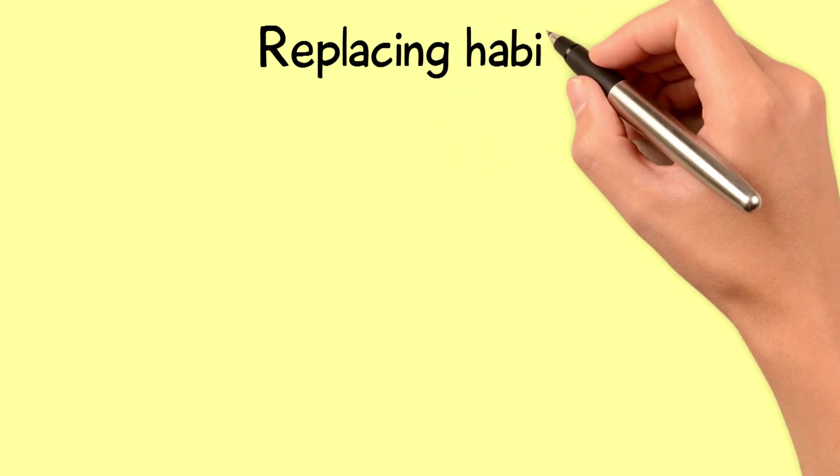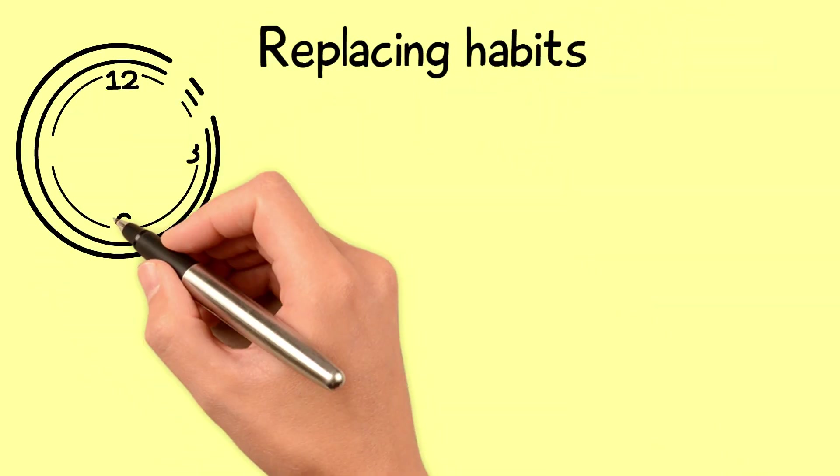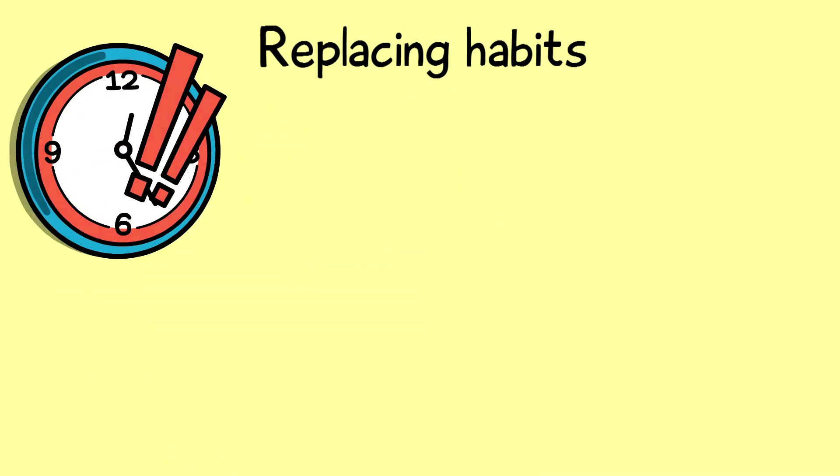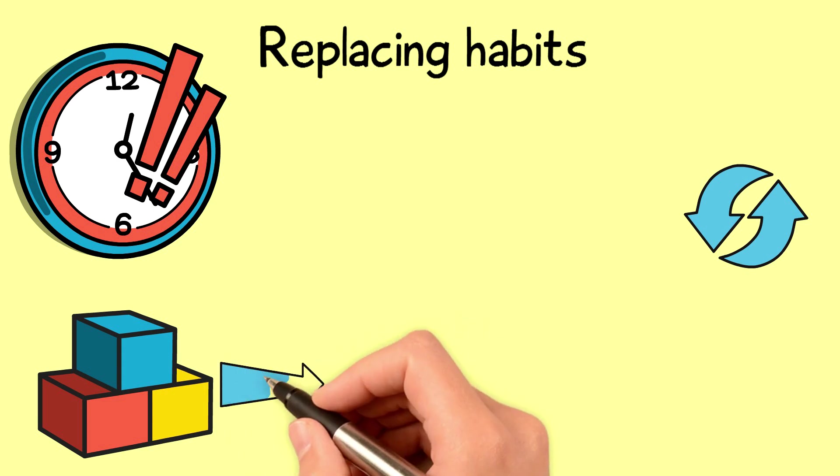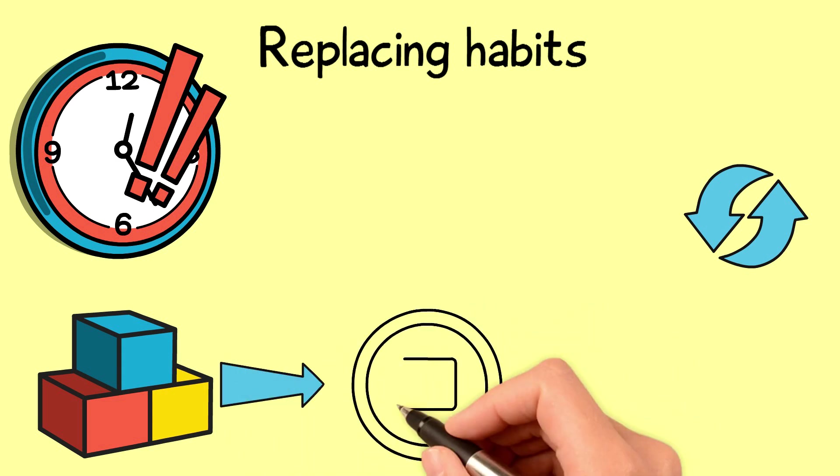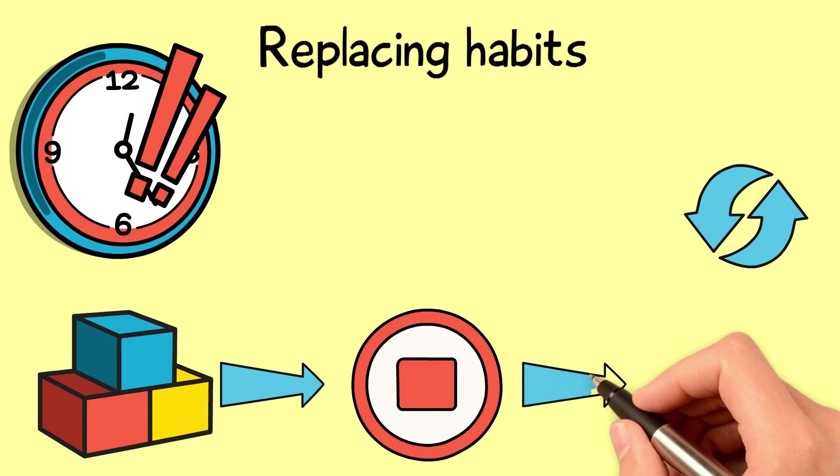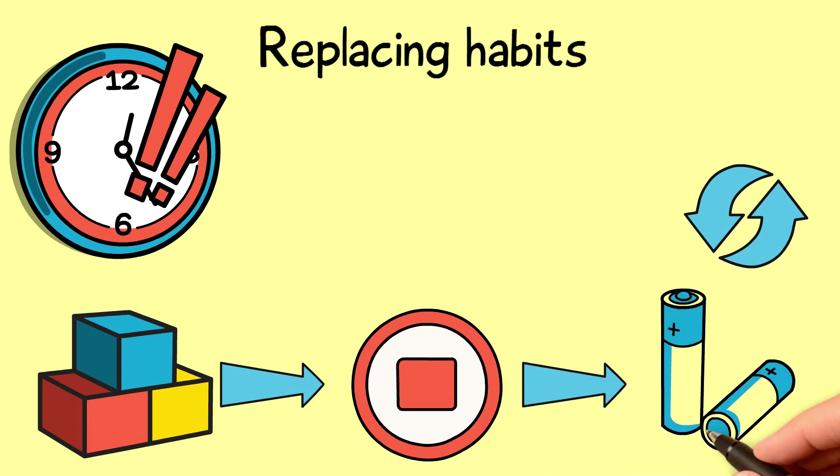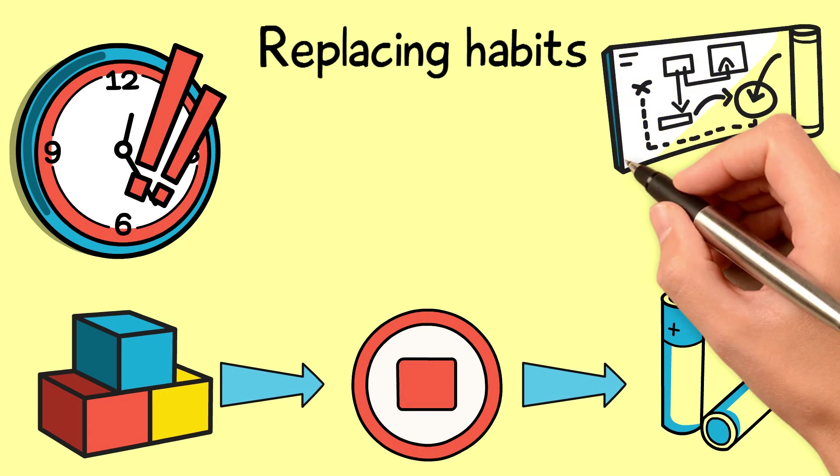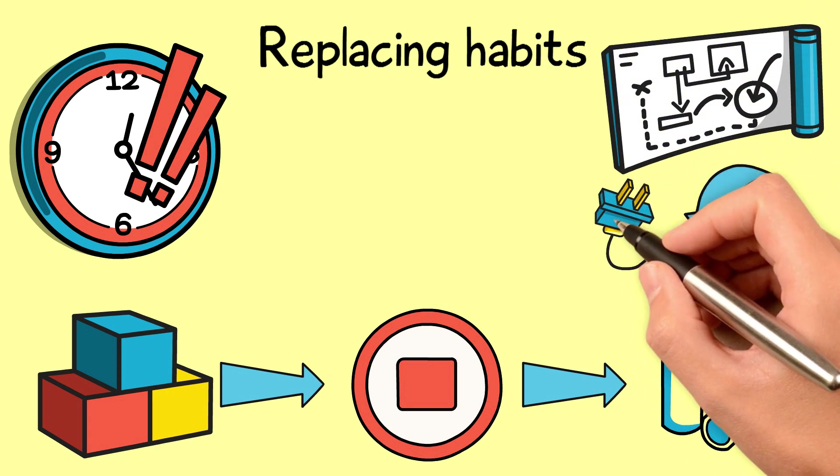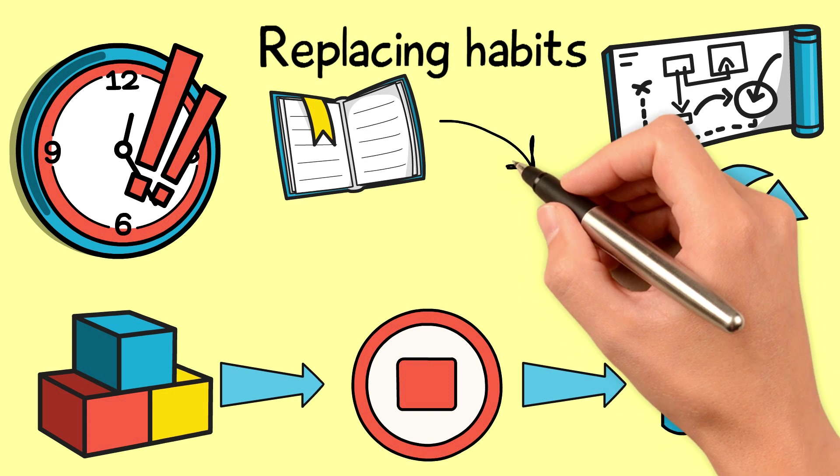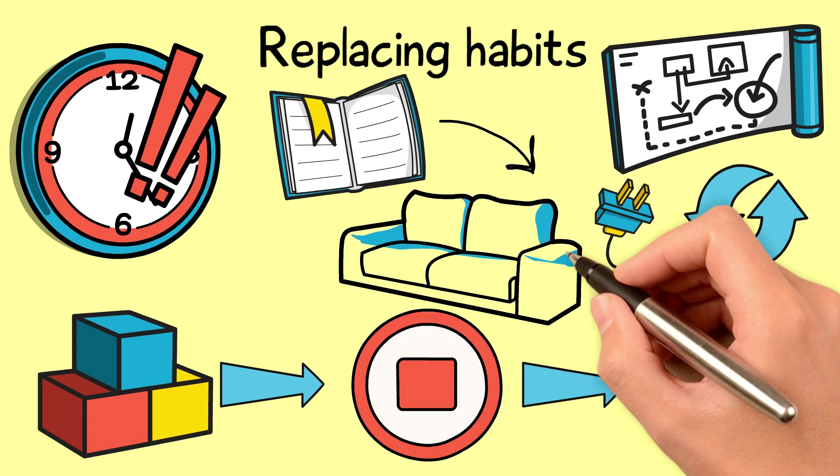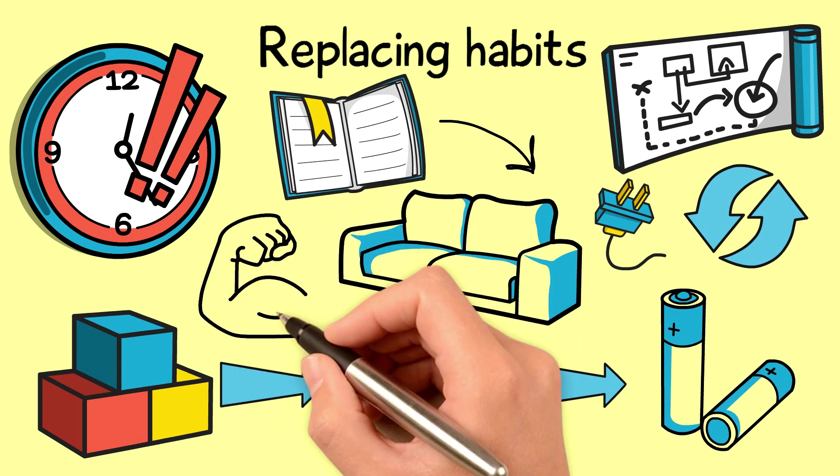To replace the habit of watching TV by reading a book, you'll have to flip the time required to get started. Well, it doesn't sound practical to switch places of the TV and the study table, right? Although there are small things you can do. Start with the remote. Put it in the other room every time you close the TV. Make it even harder by removing the batteries and putting them inside a drawer with a lot of stuff. Now, make the plan foolproof. Every time you close the TV, remove its plug from the power source. Finally, take the book you are reading and put it on the couch.